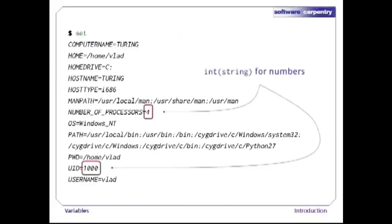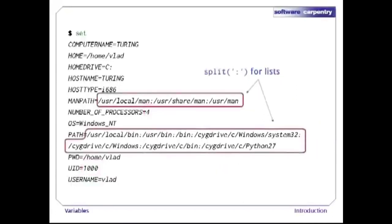Some variables store lists of values — the convention is to use a colon as a separator. If a program wants the individual elements of such a list, it's the program's responsibility to split the variable's string value into pieces. Let's have a closer look at one of the most important of those list-valued variables, PATH. Its value defines the shell's search path, i.e., the directories that the shell looks in for runnable programs.